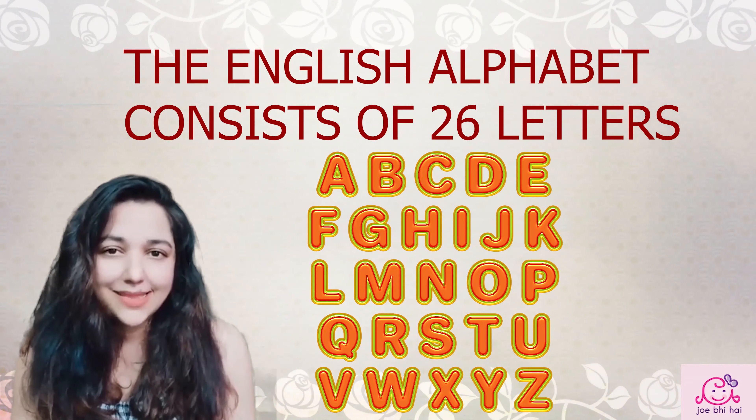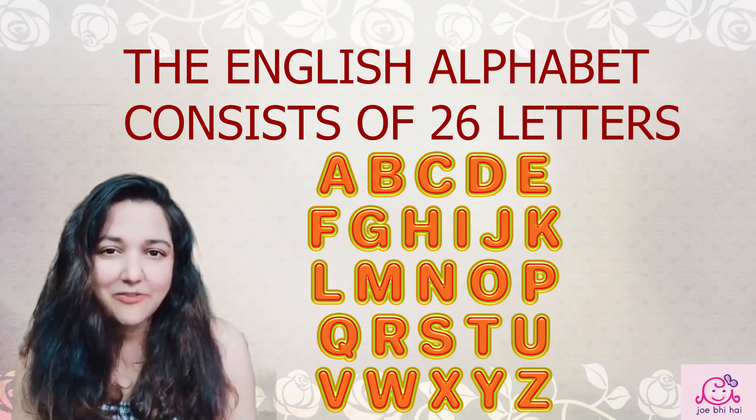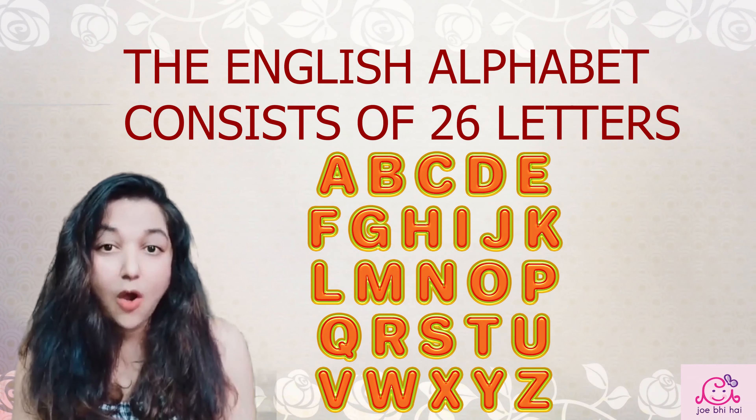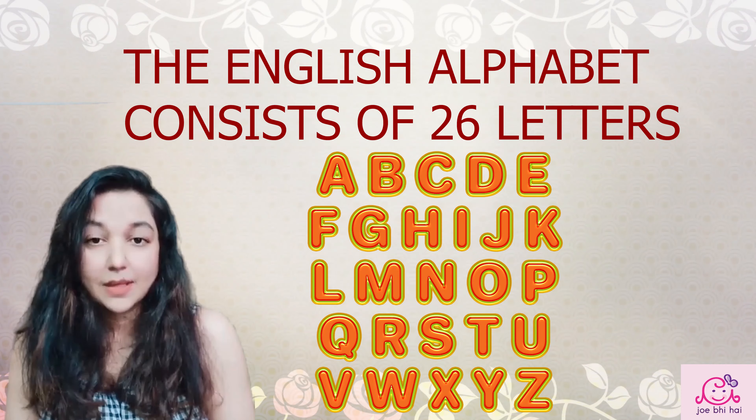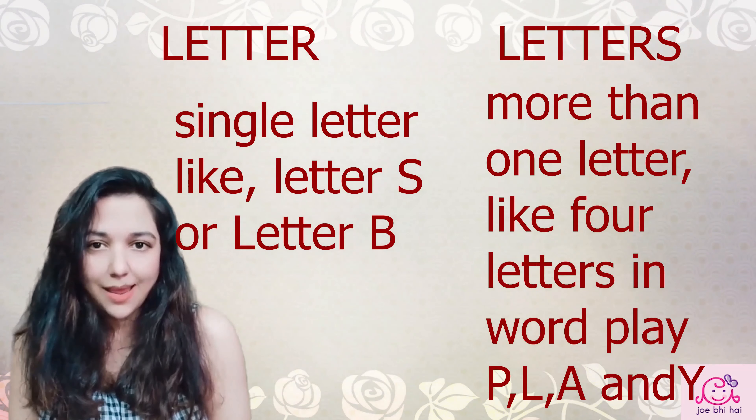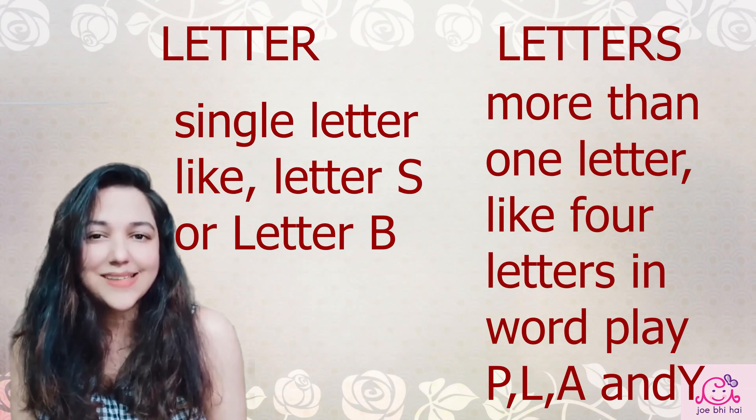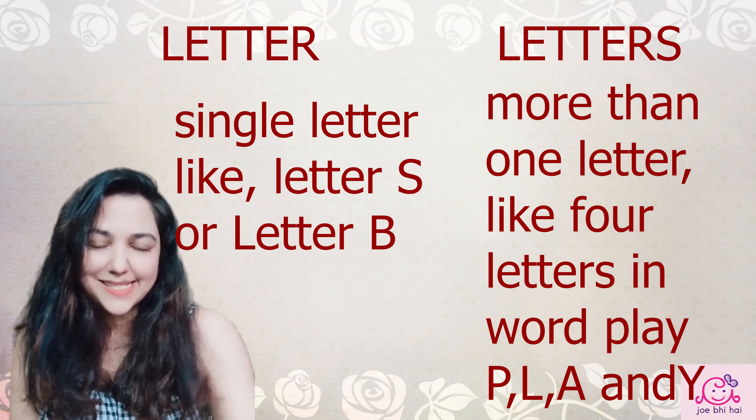We can say that the English alphabet consists of 26 letters. Letter is singular, like letter A or letter B, and letters is plural, like letters A, B, C, D.